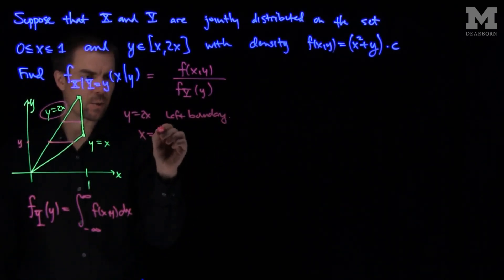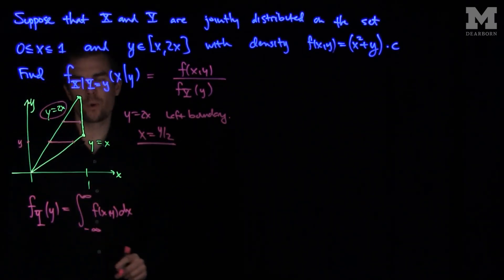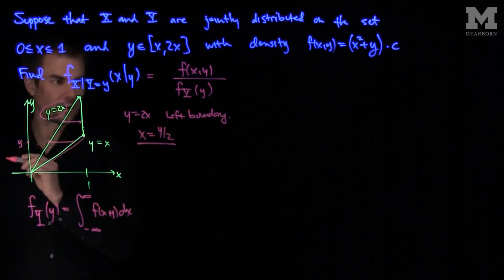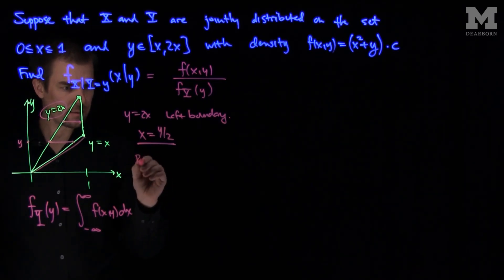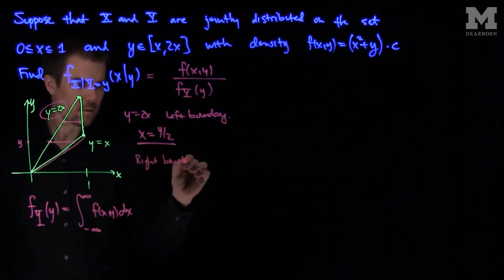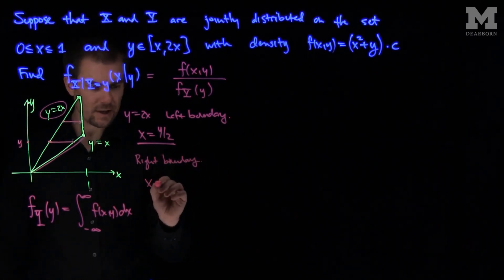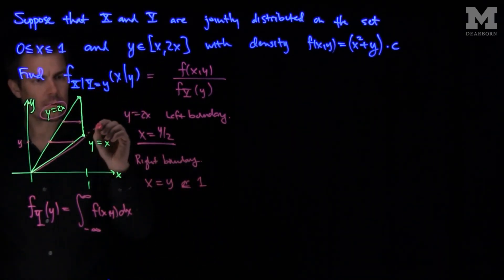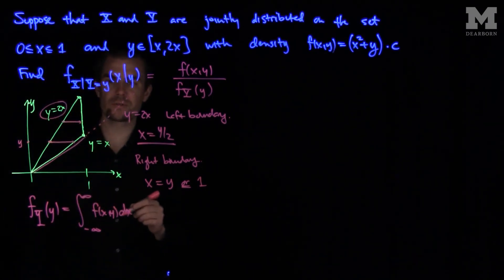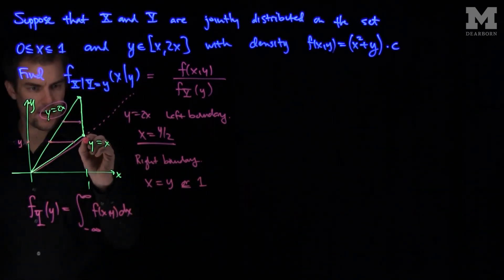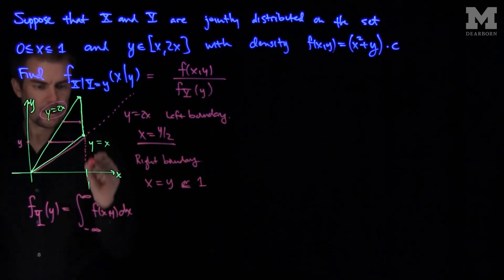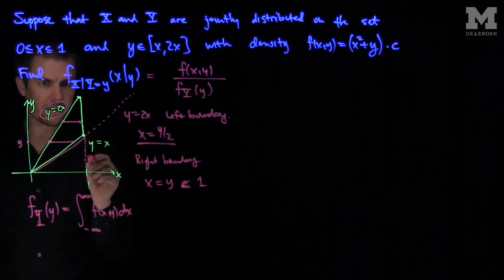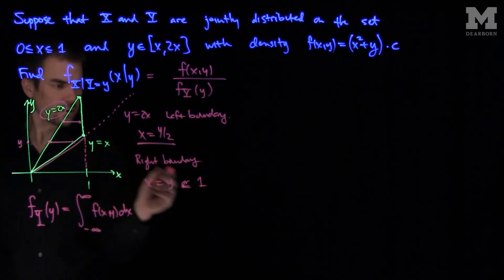On the left boundary, y equals 2x, so x equals y over 2. On the right boundary, x is equal to either y (from y equals x) or x equals 1. We see that x is either equal to y or x could be equal to 1. So if you're before x equals 1, then x selects y; if you're at or after that value, you select 1.